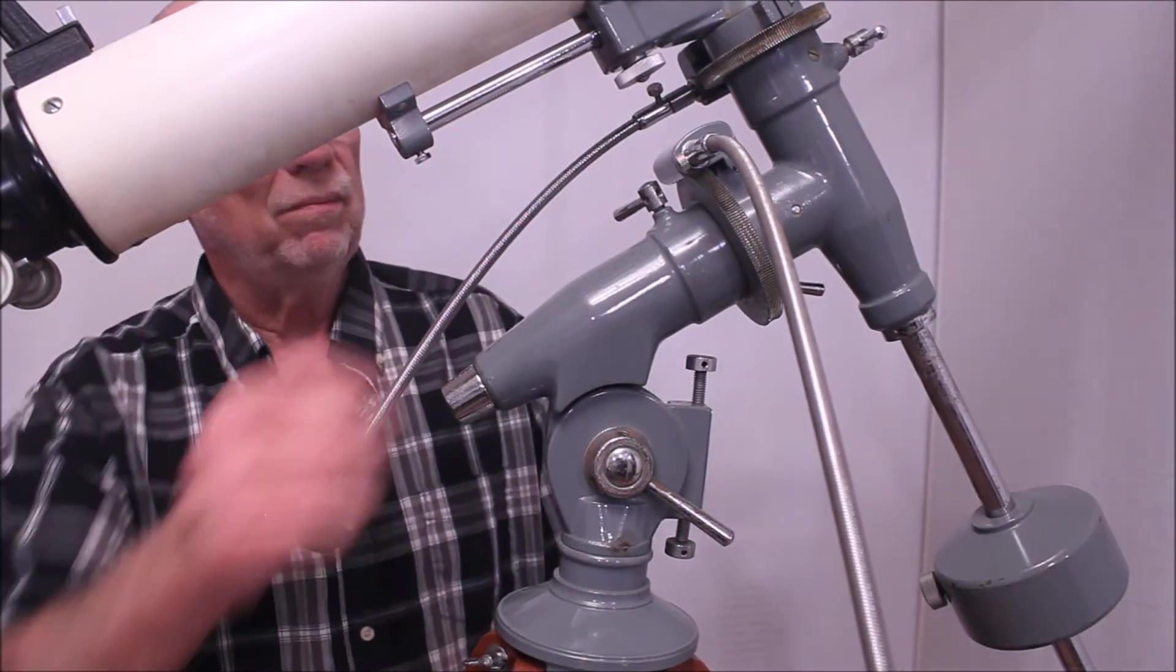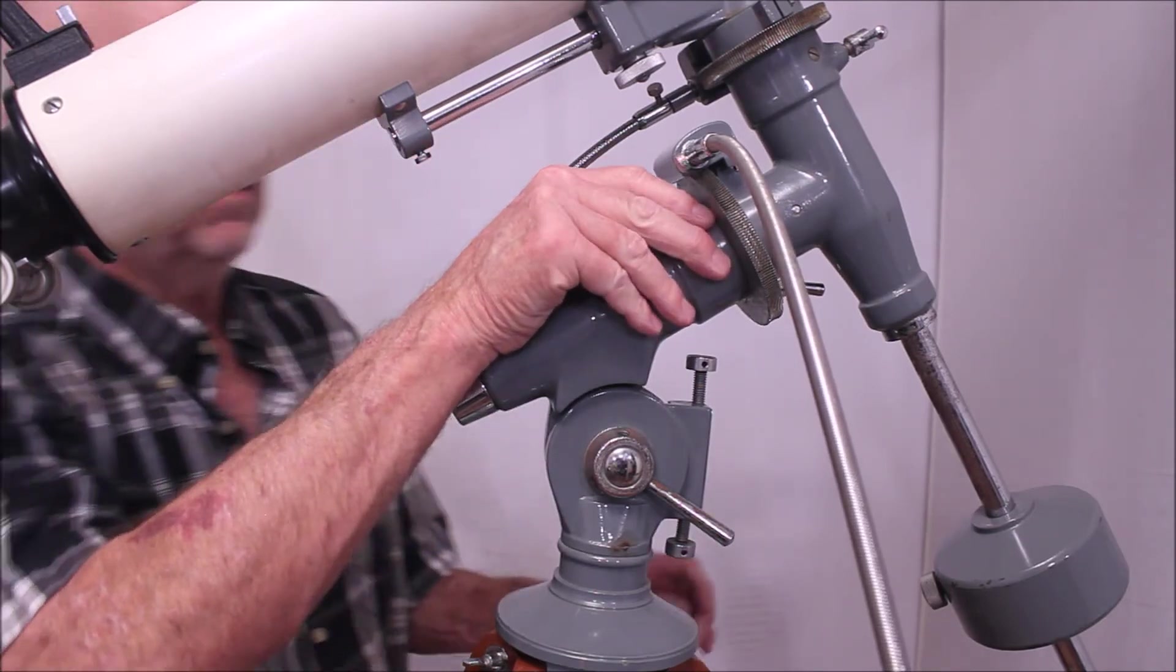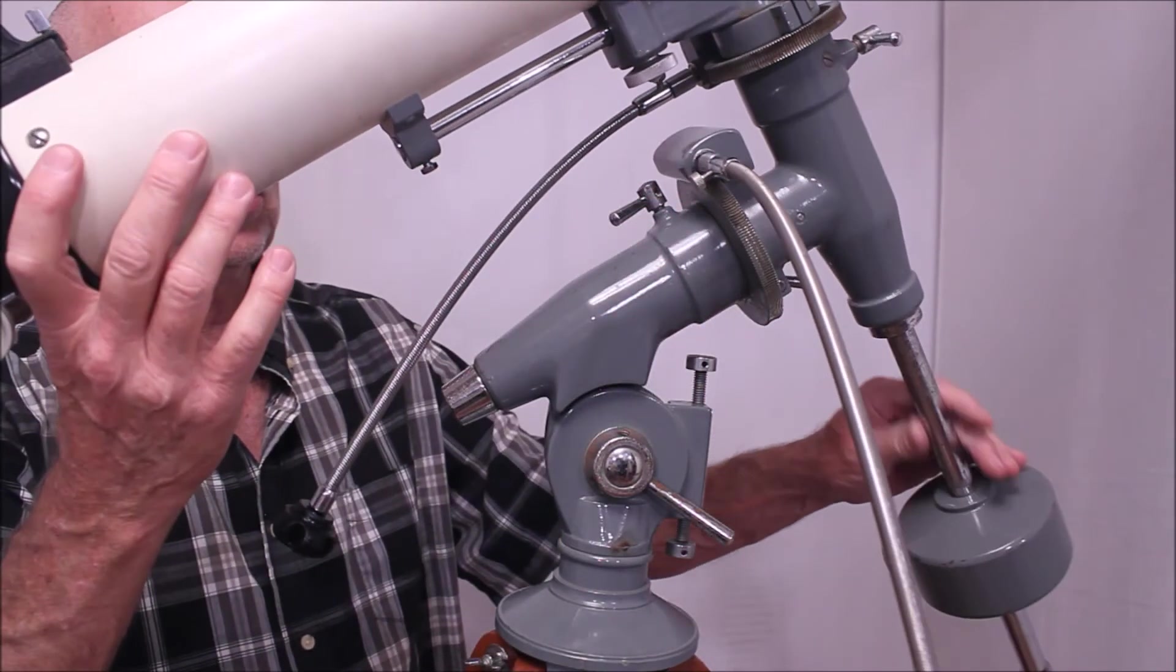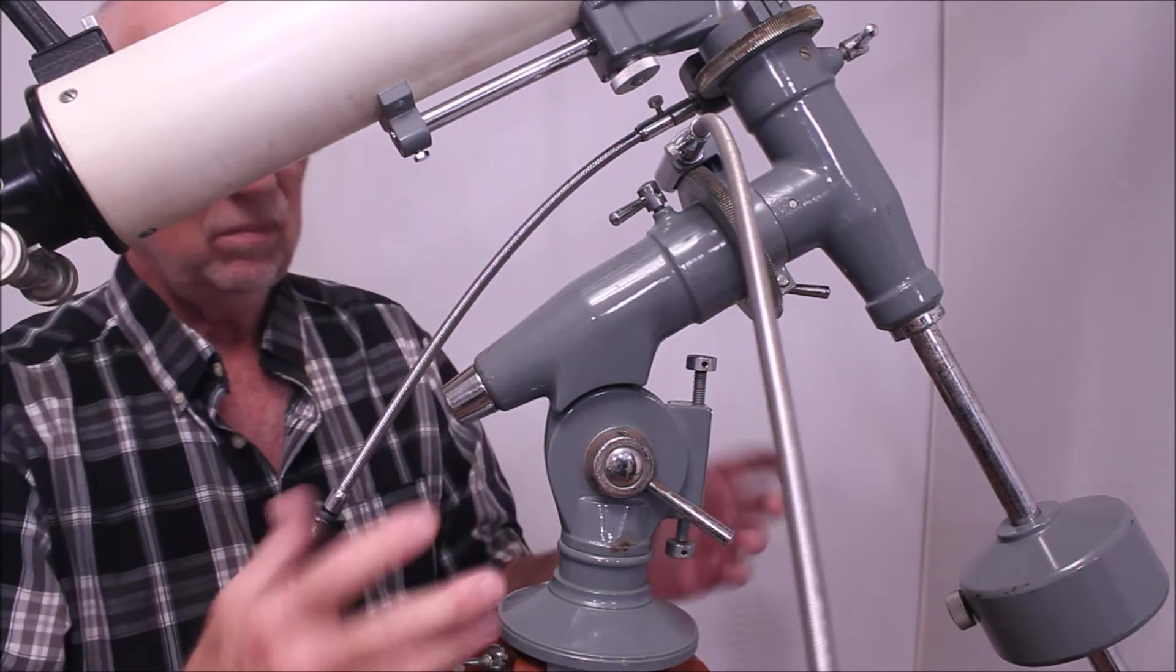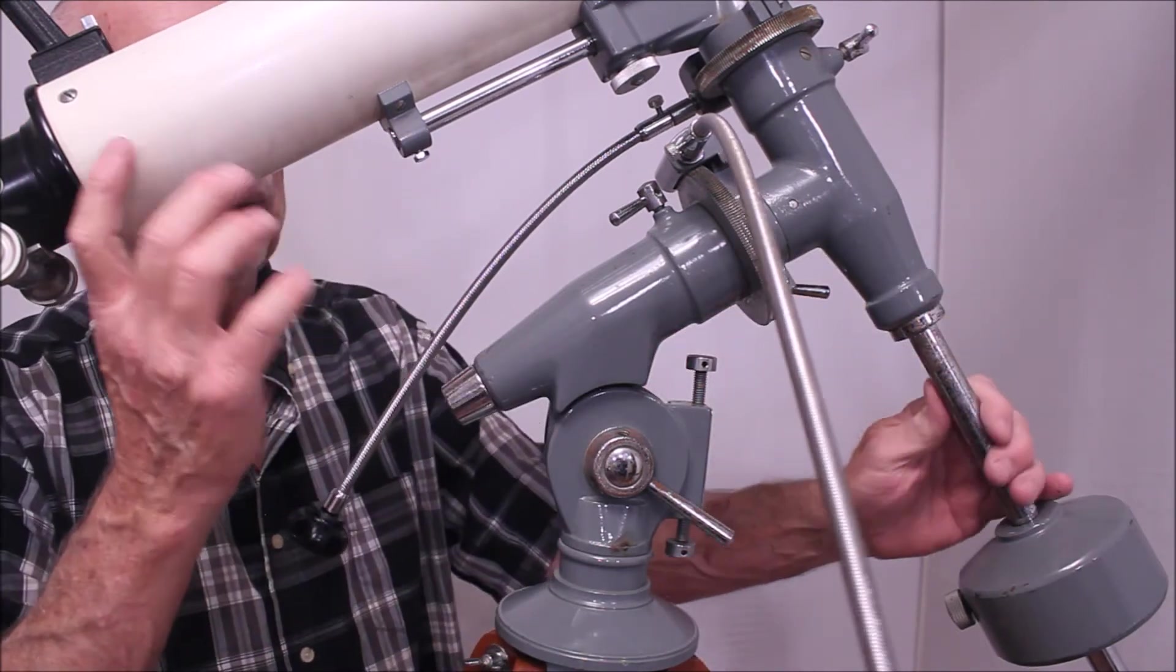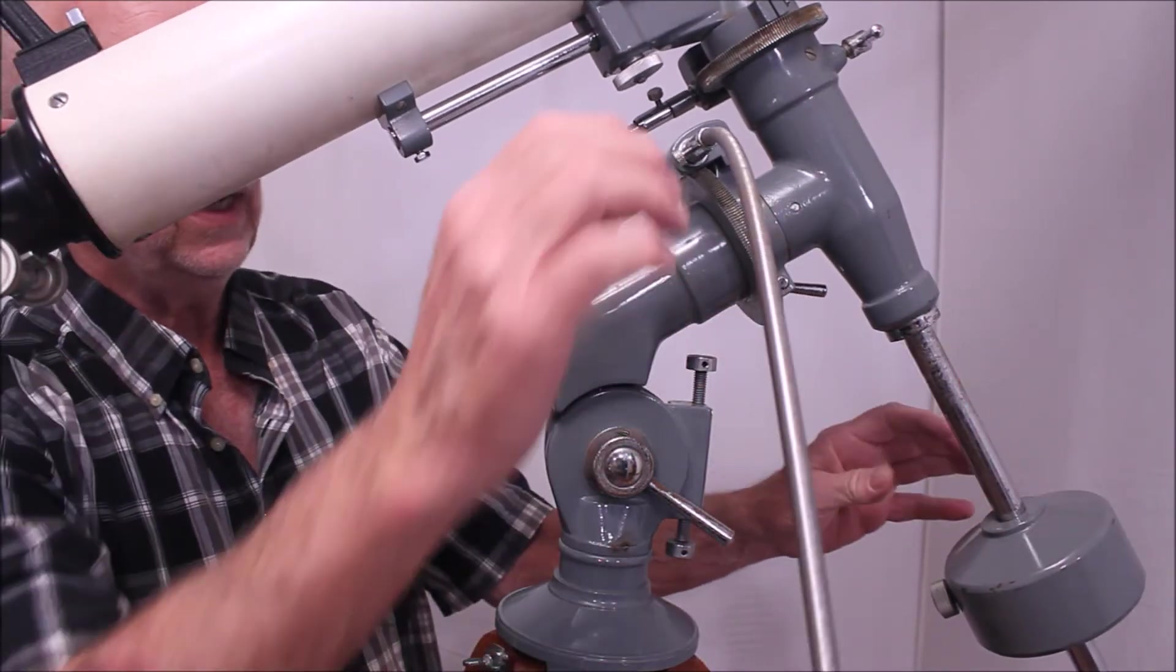Here's a close-up look at the mount on the scope. I've got another video on a model 106 which is in all respects identical, maybe a few very minor differences but essentially identical to this scope.